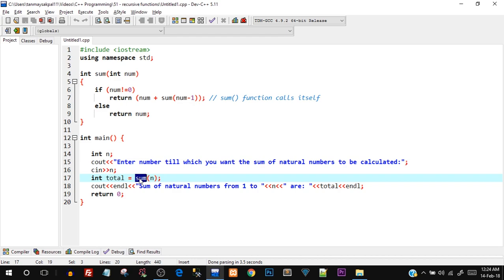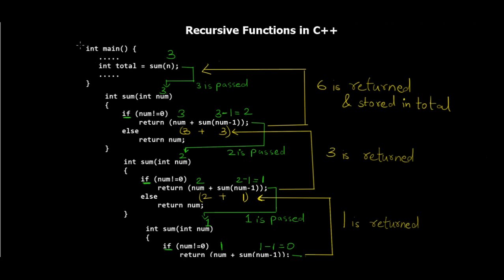Let me switch to the digital blackboard to show exactly what happens behind the scenes. In the int main function, int total equals sum of n is called — we're passing number three. This three is passed to the first function call. Inside sum, num is three, which is not equal to zero, so the if block runs: return num plus sum of num minus one, which is three plus sum of two. So a second function call is made with argument two.